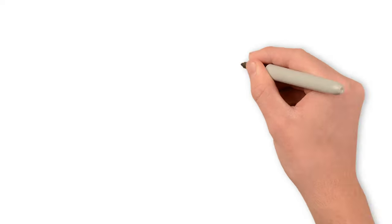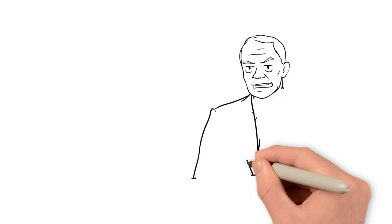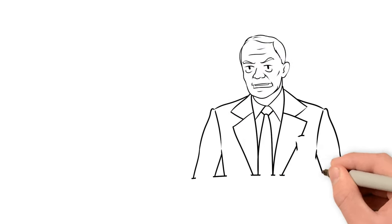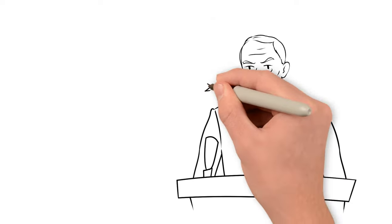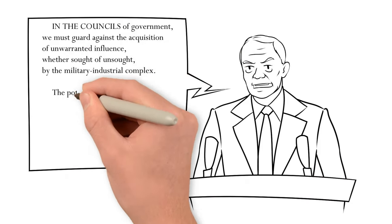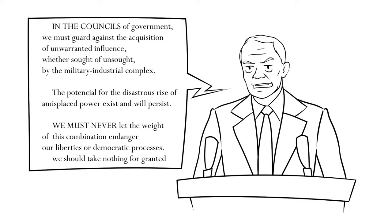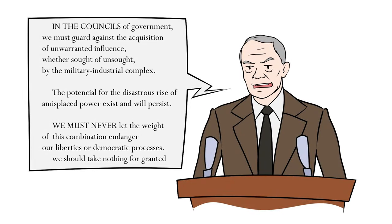Eight years later, Eisenhower warned Americans to guard against the acquisition of unwarranted influence by the military-industrial complex, which he defined as the conjunction of an immense military establishment and a large arms industry.